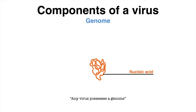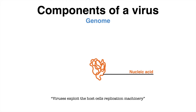The most important component of a virus is its genome. Any virus possesses a nucleic acid that carries the genetic information required for the synthesis of essential proteins. The main function of a virus is to replicate the genome to produce more of its kind. In part, the replication machinery of the host cell is exploited to this cause.